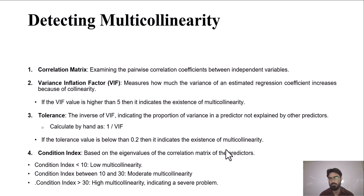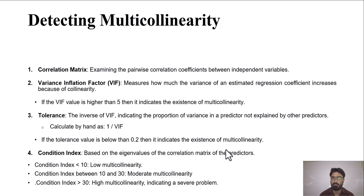The last famous method for detection of multicollinearity is the condition index. When the condition index value is less than 10, it means there is low multicollinearity and you can run your model. If it is between 10 and 30, it might be moderate multicollinearity. If the value is greater than 30, it might be the case of high multicollinearity.